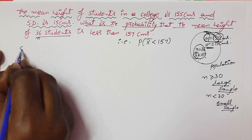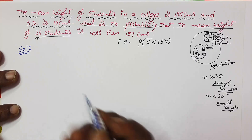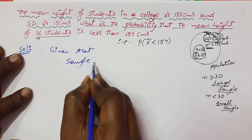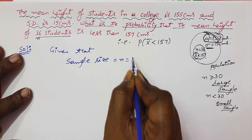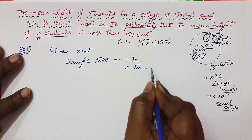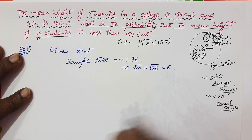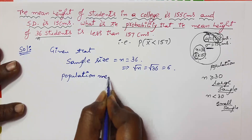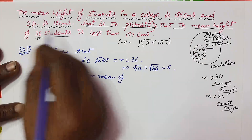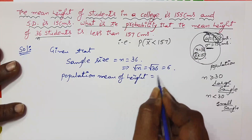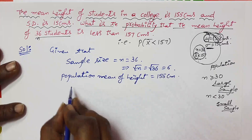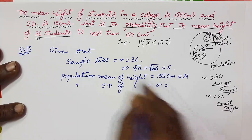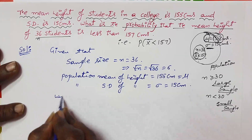Solution: write the given data with notations. Sample size n equals 36, so root n equals root 36 equals 6. Population mean mu equals 155 centimeters. Population standard deviation sigma equals 15 centimeters.